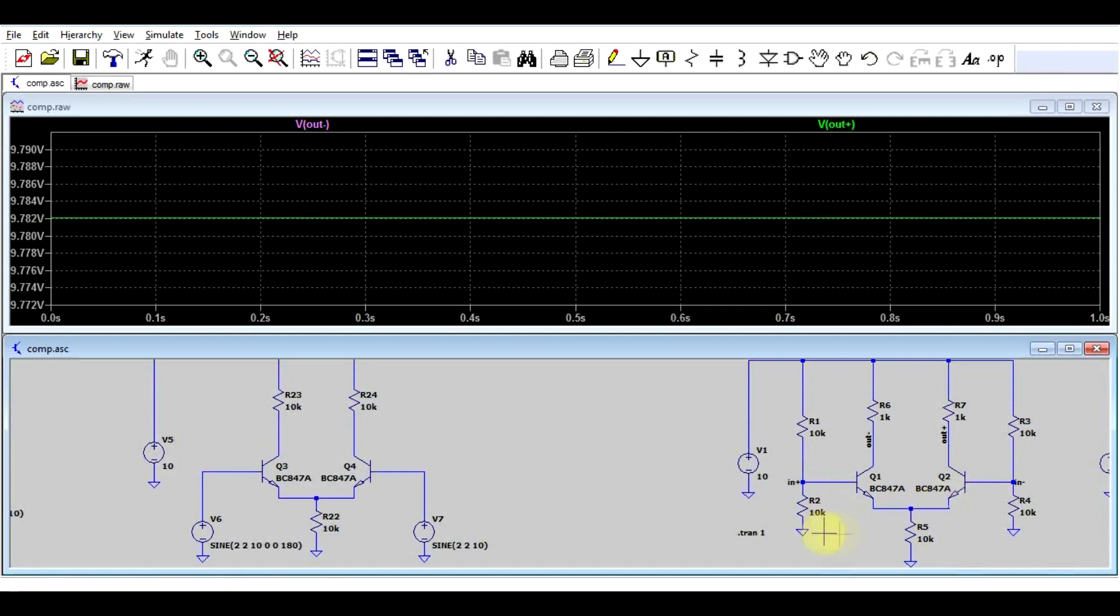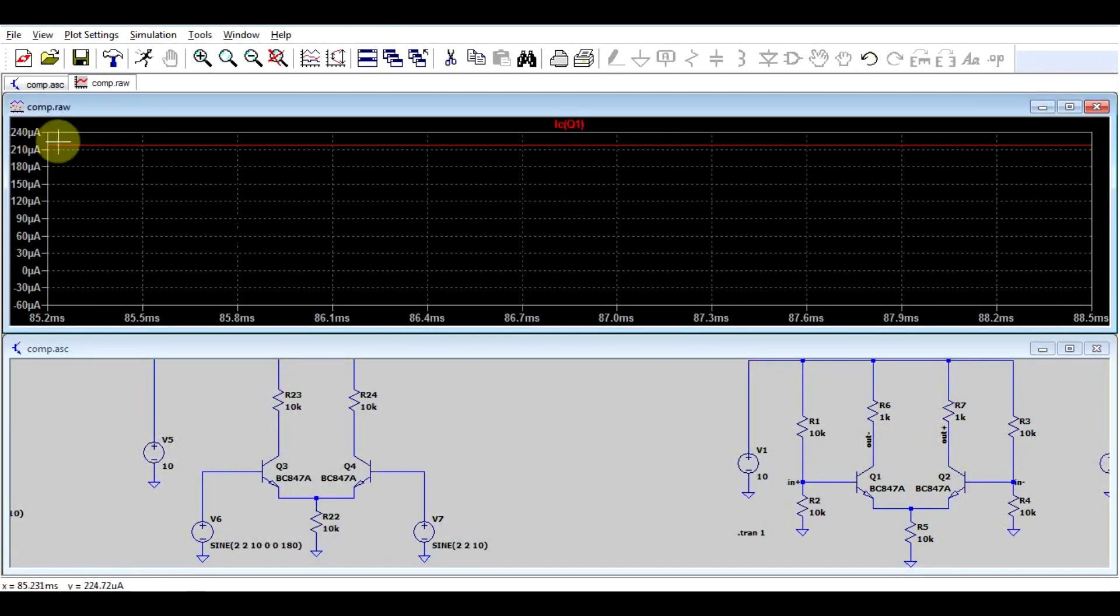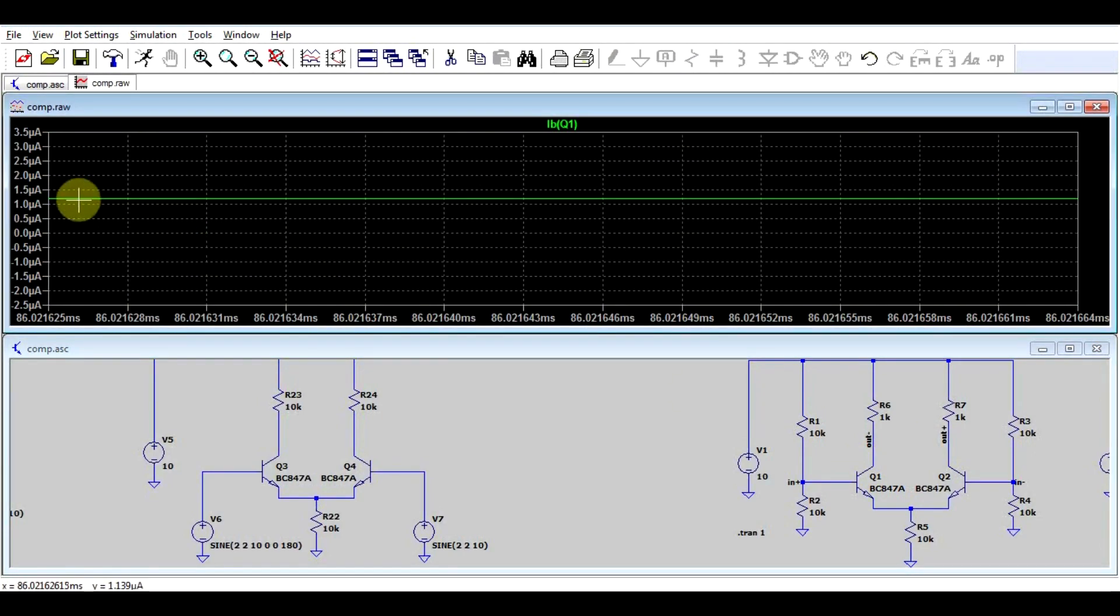So there seems to be no input offset voltage. The input offset being the voltage difference between the two inputs when our output is in balance. Now in a simulator I can't really show you the input offset since both of these two transistors are exactly identical. That's something that's best shown in real life. But what I can show you on the other hand is input bias current. Now the bipolar transistor is a current amplifying device, meaning that the collector current is the base current times the gain factor. So at the moment we have a collector current of around 220 microamps, and therefore we have a base current roughly 1.2 microamps.